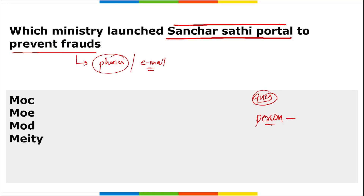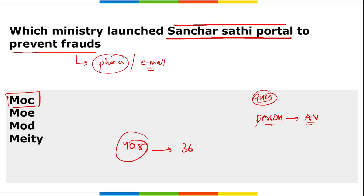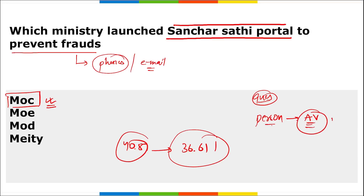The name of the person is Ashwini Vaishnav, and the ministry is the Ministry of Communication, which launched the Sanchar Sathi portal to prevent frauds by misusing mobile phones. Using this portal, a total of 40.87 lakh suspected connections were detected, out of which 36.61 lakh have been disconnected after verification, and the rest are still being processed.